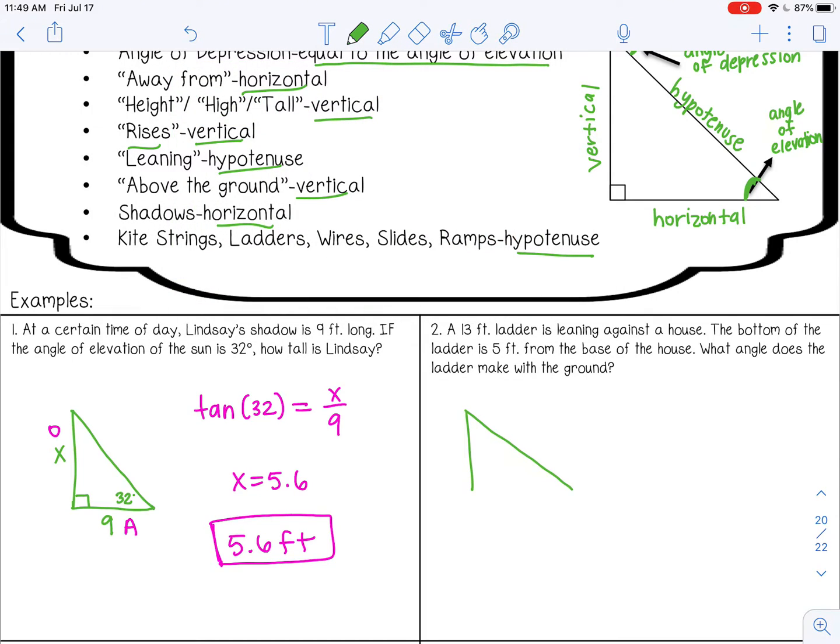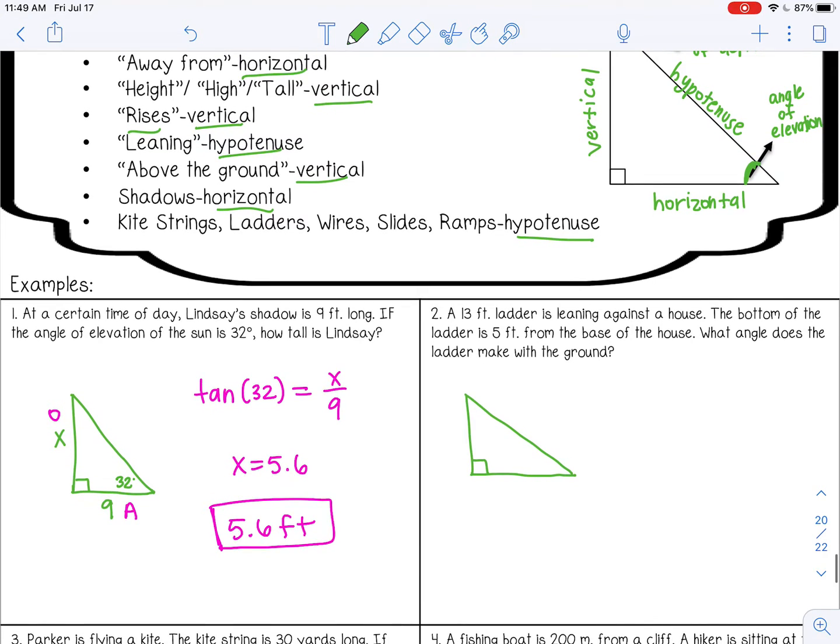So again, I always draw my triangle like this. It's going to work. So we have a 13 foot ladder and it's leaning against a house. So leaning is the hypotenuse. Think about this. This is my ladder here. This is my house. If you want to draw all that, you totally can. So 13. The bottom of the ladder, so that would be here, is 5 feet from the base of the house. So that would be the bottom. What angle does the ladder make with the ground? So we're trying to find the angle here.